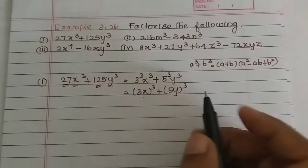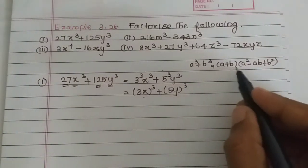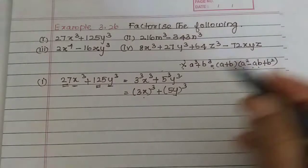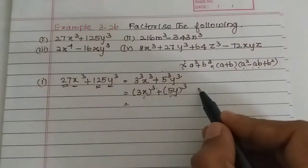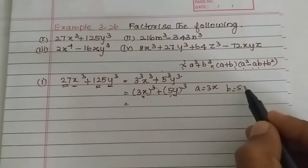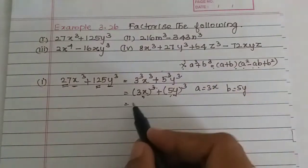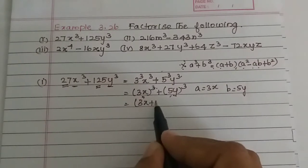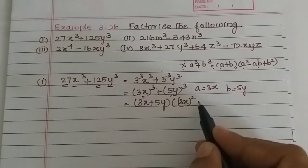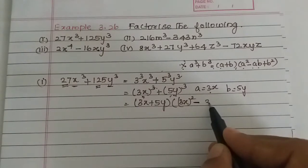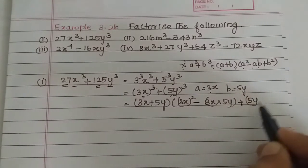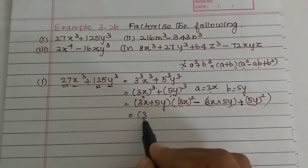Now the a³ + b³ formula applies here. So a = 3x and b = 5y. The formula gives: (a + b)(a² - ab + b²), which is (3x + 5y) into (3x)² minus (3x)(5y) plus (5y)².